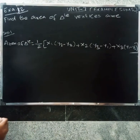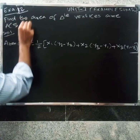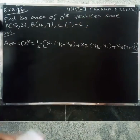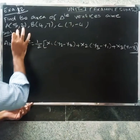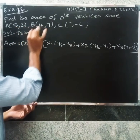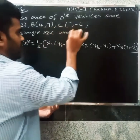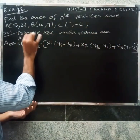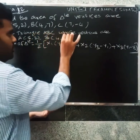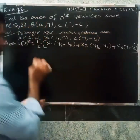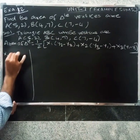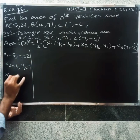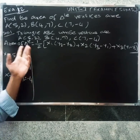Example 12. Find the area of a triangle with points A(5,2), B(4,7), C(7,-4). So x1 equals 5, y1 equals 2, x2 equals 4, y2 equals 7, x3 equals 7, y3 equals -4.